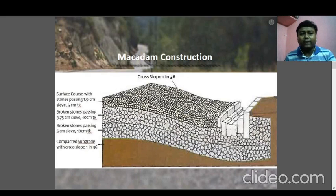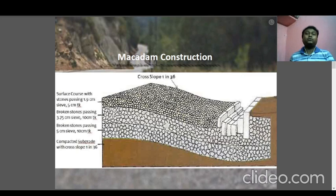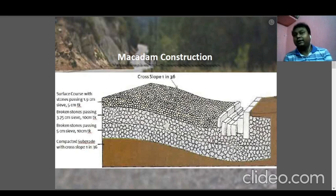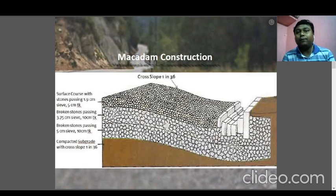Macadam is a type of road where stone chips are laid down. The surface course uses stone passing a 1.9 cm sieve and 5 cm thick, with broken stone passing a 3.75 mm sieve and 10 cm thick. Sieve analysis is the basic test for aggregates and testing their various properties. Before constructing any road, aggregate is a primary raw material, and we cannot use the same type of aggregate in all different projects. IS codes specify which size aggregate should be used for each particular type of construction, and this size classification is done by sieve analysis.